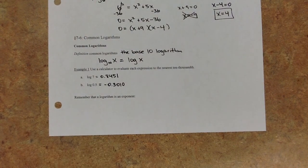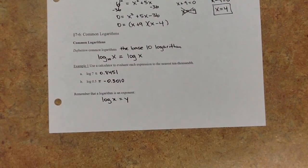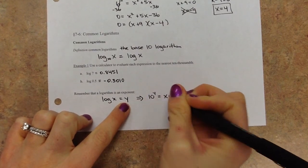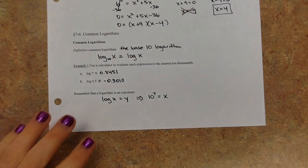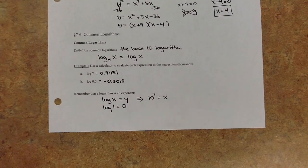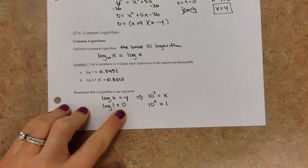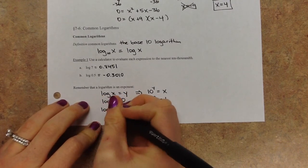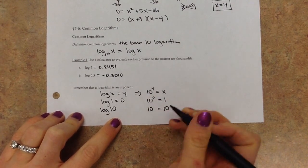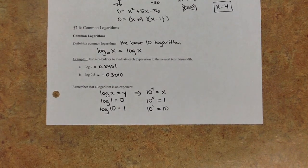Remember, a logarithm is an exponent — I'm going to keep emphasizing this point. So anytime you see 'log of x equals y', and if you don't see a base it means base 10, that's the same as saying 10 raised to the power y equals x. We're just converting back and forth between log form and exponential form. For example, log of 1 equals 0 because 10 to the zero power gives 1. Log of 10 equals 1 because 10 to the first power gives 10 — the log is the missing power or exponent.